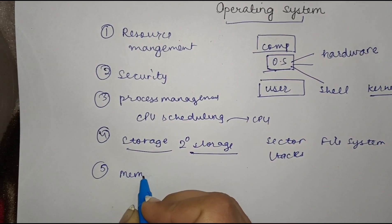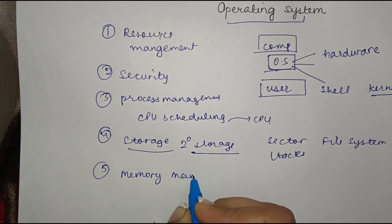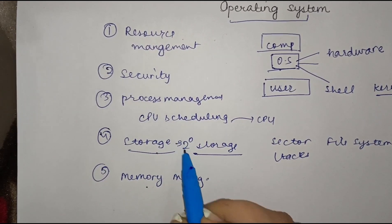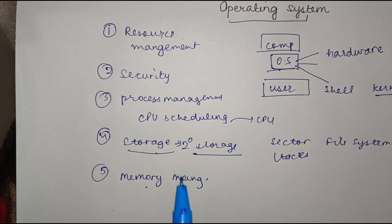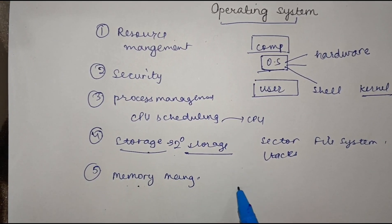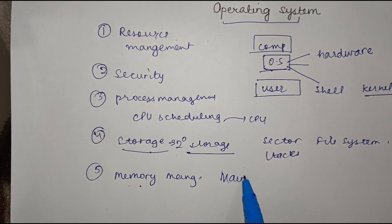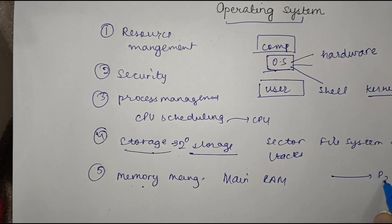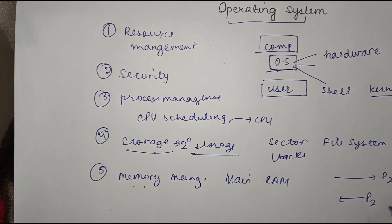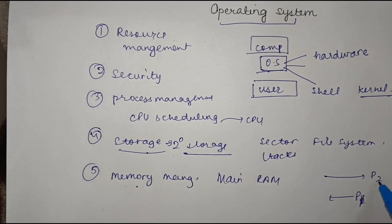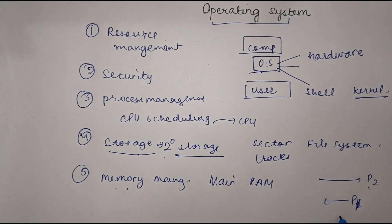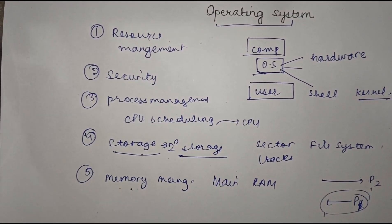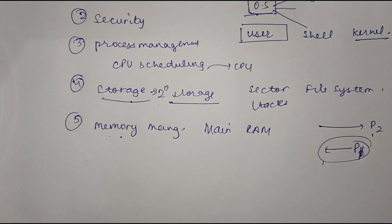The fifth function is memory management. Storage and memory management are two different things: storage refers to secondary storage, while memory management deals with the main memory, that is, RAM. It is the duty of the operating system to load one process in and move another process out of RAM — for example, if P2 needs to execute and there is insufficient space, P1 must move out.